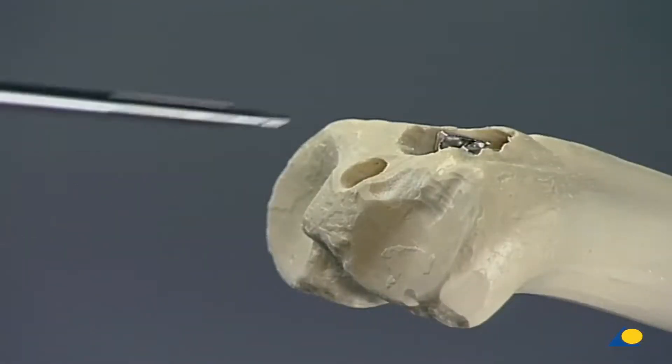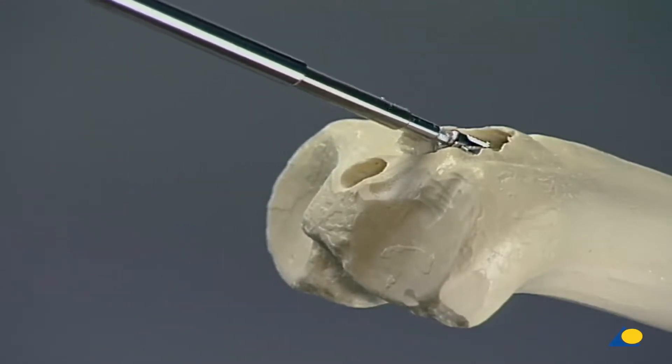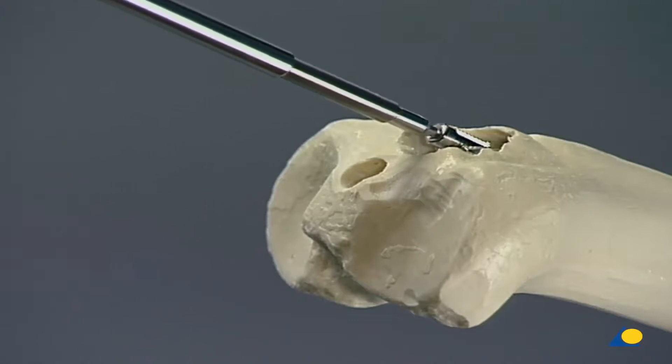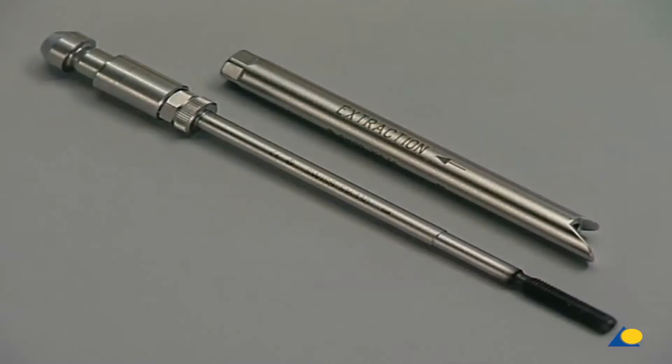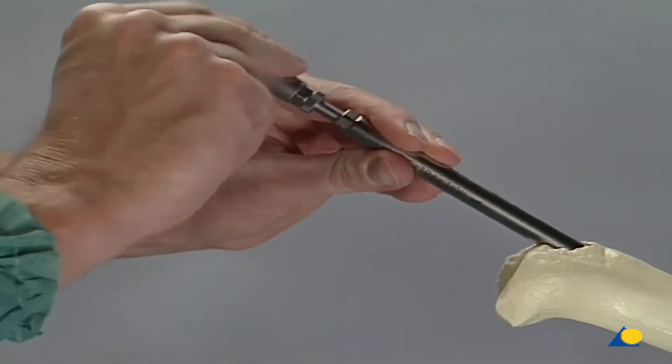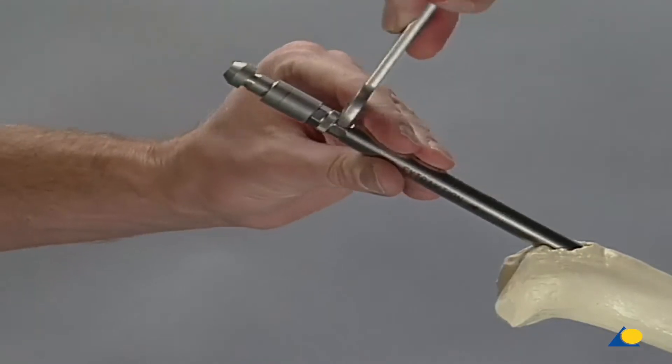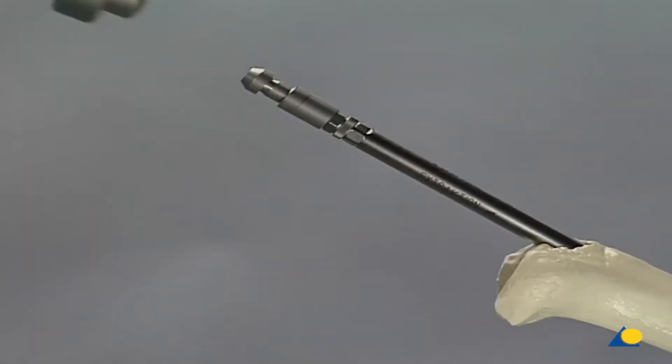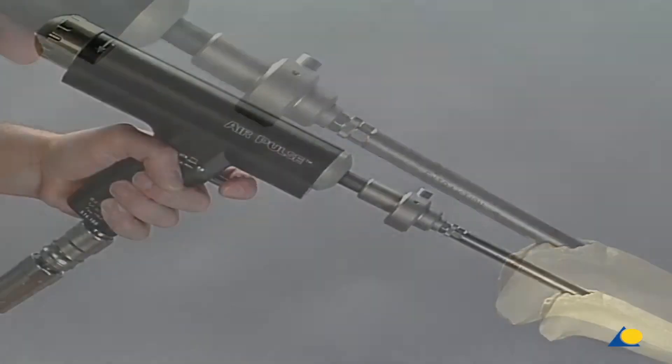For the extraction of the UTN, the end cap is removed. The coupling block for extraction is attached with the special connecting screw and tightened, and the locking bolts are removed. The air pulse is applied and the UTN is removed with gentle impulses.